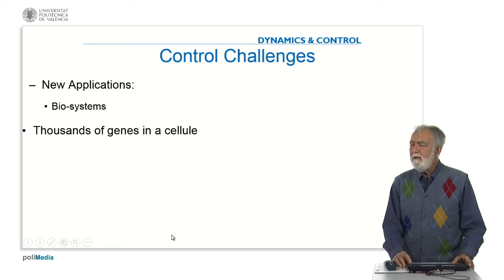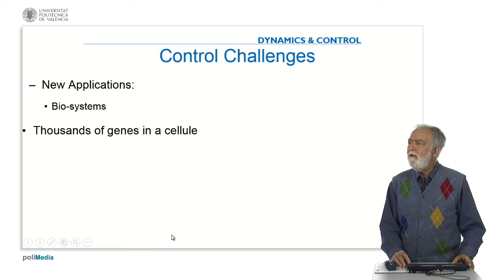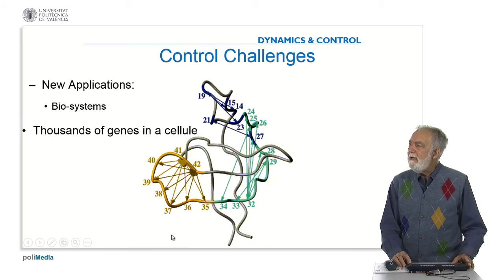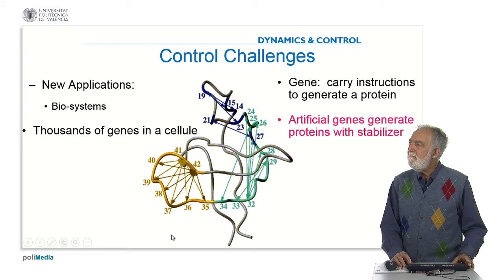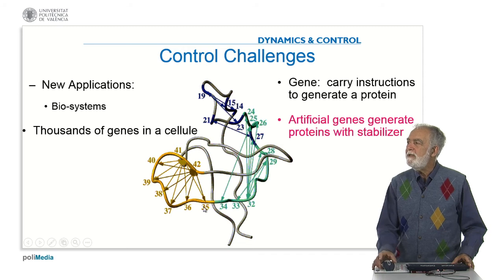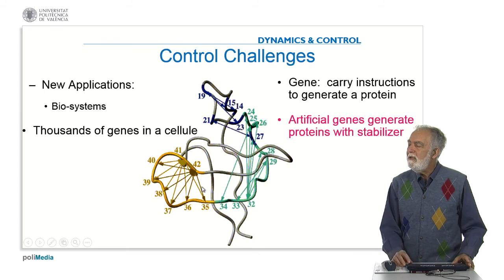We may also consider control at a small level: a cell contains thousands of genes, and there are already works trying to implement artificial genes that can generate proteins with stabilizers, where one part acts as a regulator and the other part acts as a process. So you are integrating the idea of process control at the level of a cell.